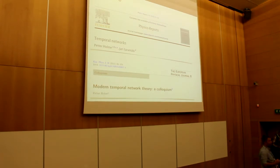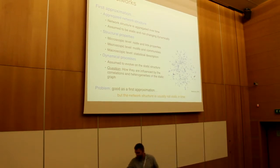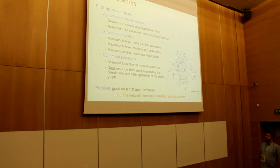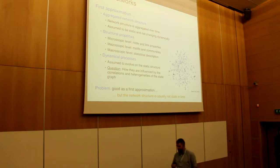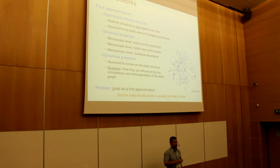In order to speak about temporal networks, first we have to understand why they are important. In the last 15-20 years of network science, in the very beginning, when we said we were working on networks, we were associated with static networks — aggregated network structures with a set of nodes connected by a set of links, and we assumed that nothing is changing. We worked out a lot of measures to characterize these types of networks on any level.